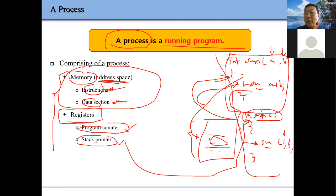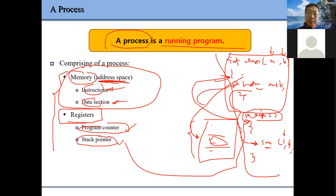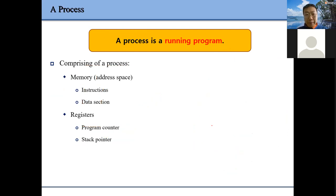When we call main, the system needs to set up the stack pointer and put your input arguments — for example, main function may have some input arguments — onto the stack. If you don't set up the stack pointer properly, the program cannot be run or executed. So the stack pointer is very important.